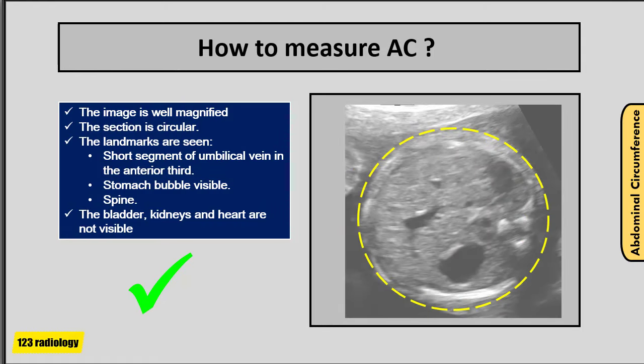Magnify so the cross-section of the fetal abdomen fills at least 30% of the monitor, and do not distort the circular shape by applying too much pressure with the transducer. This is an example of correct abdominal circumference measurement: the image is well magnified, the section is circular, landmarks are seen — short segment of umbilical vein in the anterior third, stomach bubble visible, spine at 3 o'clock — and the bladder, kidneys, and heart are not visible. The ellipse calipers are well placed on the outer skin surface.